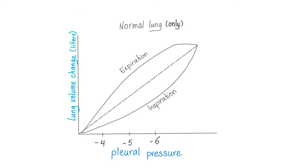This was the story of the pressure-volume loop — please don't confuse it with the flow-volume loop. In the next video, we'll talk about diffusion capacity of carbon monoxide, also known as DLCO.